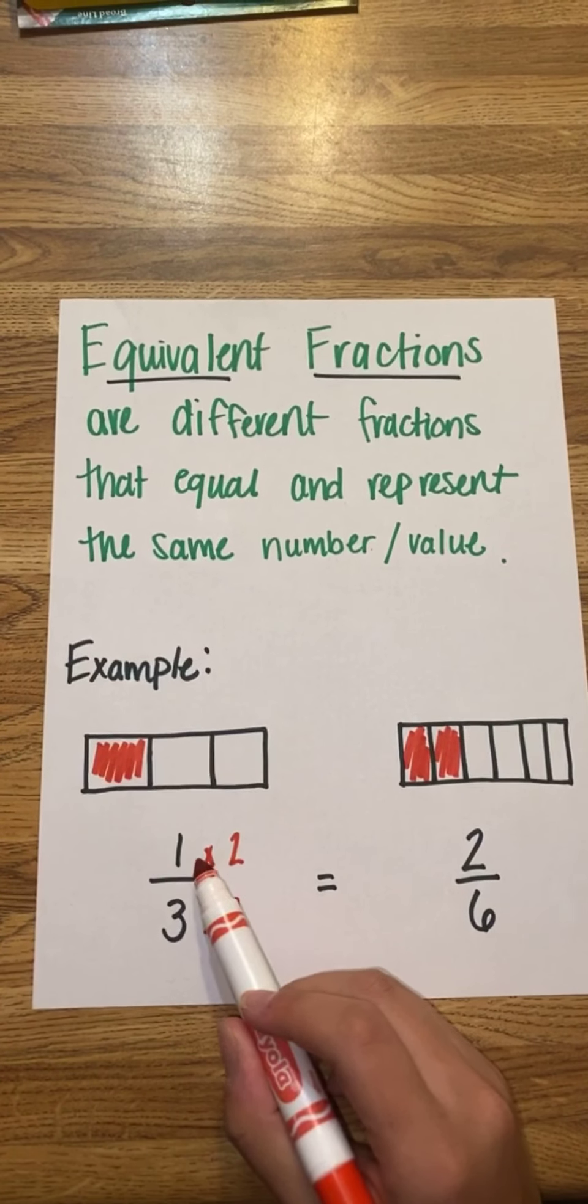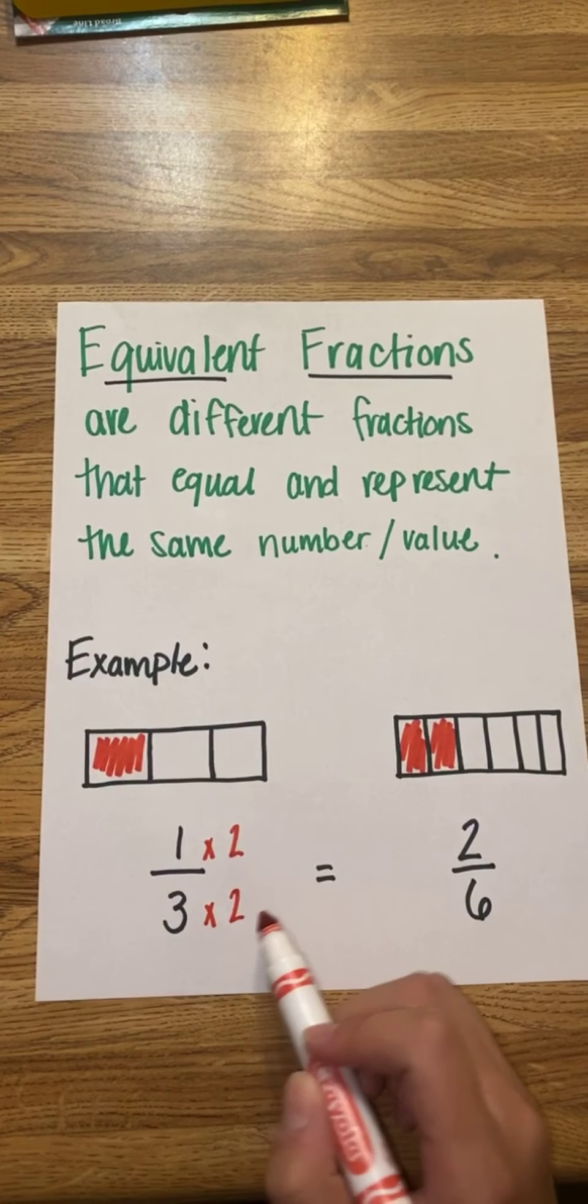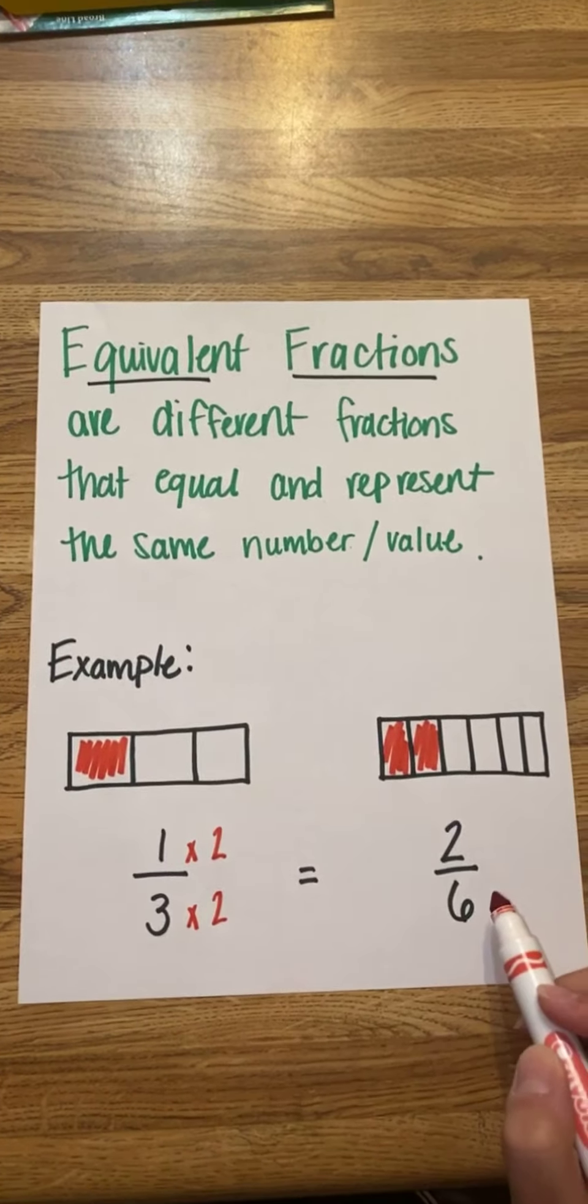1 times 2 is 2, and 3 times 2 is 6. So these two fractions, 1/3 and 2/6, are equivalent.